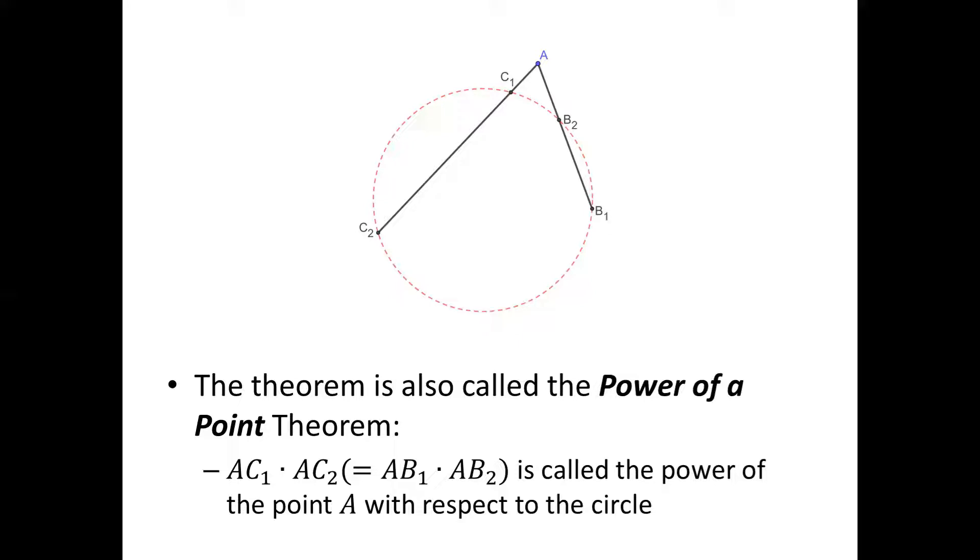Then we draw another line also passing through A with two intersections, C1 and C2 on the circle. We calculate another product AC1 · AC2. No matter how we choose the line, the product is always the same.